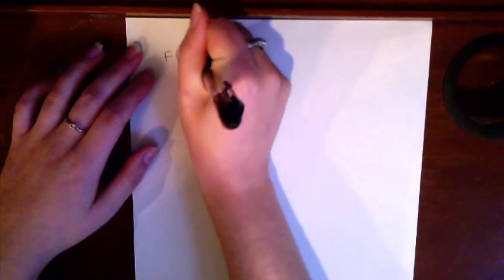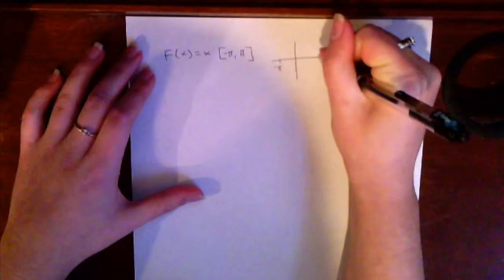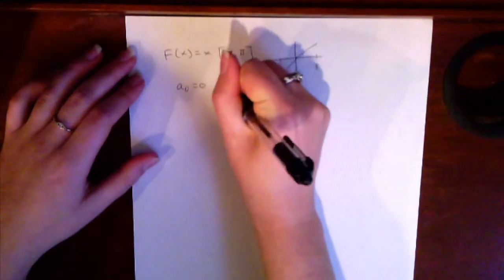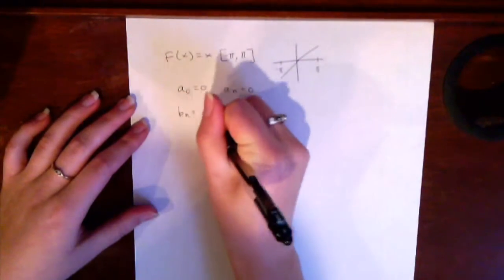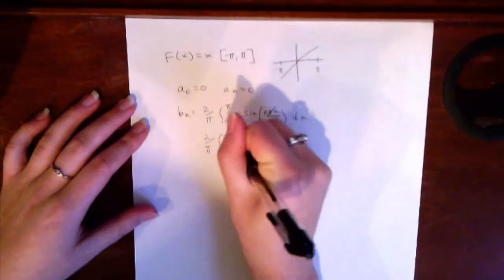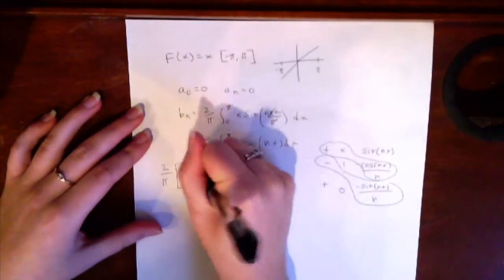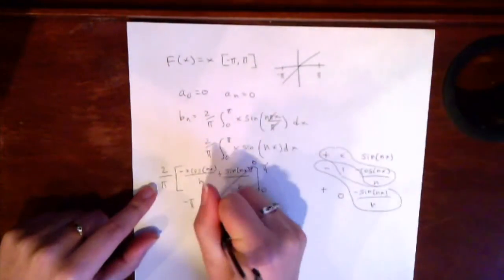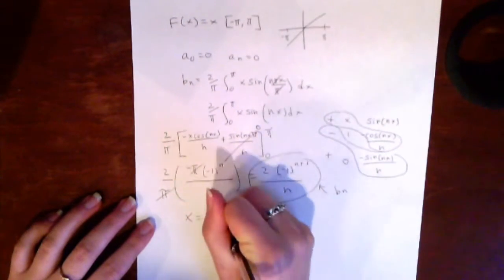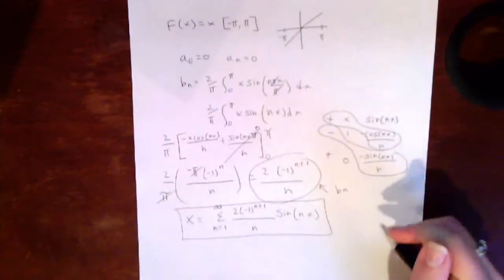In the first example, we'll find the Fourier series of the function x defined on negative π to π. Since the function is already defined on a periodic interval, I don't have to periodically extend it. I'll start by noting that it's an odd function, which means a₀ and a_n are 0. Then I'll compute b_n, which is 2 over π times the integral from 0 to π of x sine(nπx/π), which simplifies to sine(nx). I do integration by parts, plug in the limits, and end up with the sum from n=1 to infinity of 2(−1)^(n+1)/n times sine(nx).